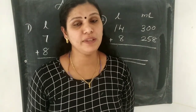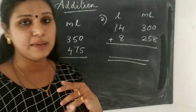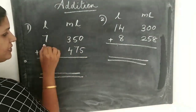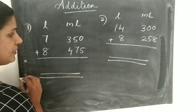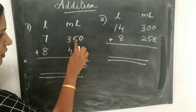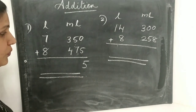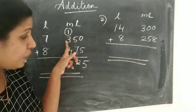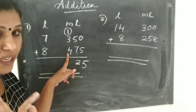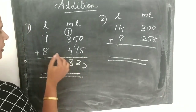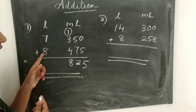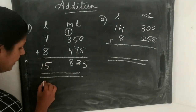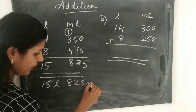Now we are going to study about adding litres and millilitres, just like we did with centimetres/metres and grams/kilograms. First problem: 7 litres 350 millilitres plus 8 litres 475 millilitres. Adding: 0 plus 5 is 5, then 5 plus 7 gives 12 — write 2 carry 1. Then 1 plus 3 is 4, 4 plus 4 is 8. Then 7 plus 8 is 15. Answer: 15 litres 825 millilitres.